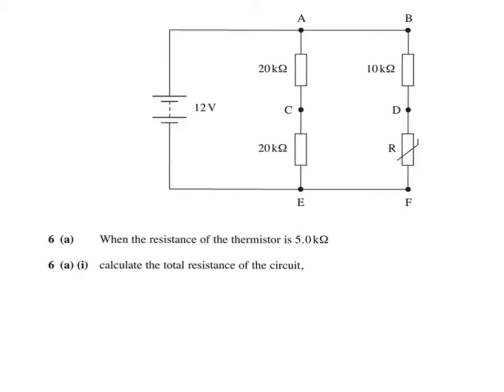So this is a question on circuits from January 2013 Unit 1 paper. This question's quite nice because it incorporates quite a few different parts of the circuit stuff. We've got a thermistor kicking around in there that's going to play a part later on, some series resistors, some parallel resistors, and some unit conversions because it gives them all in kilo-ohms.